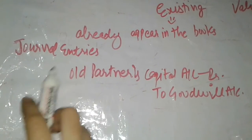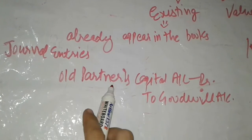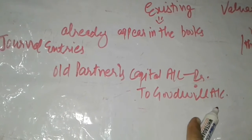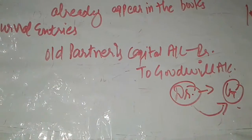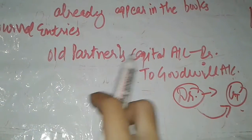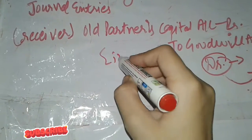Now we will see the journal entry for existing goodwill: Old Partners' Capital Account debit, to Goodwill Account. The logic behind this entry is that when goodwill appears in the books, it has a debit balance, and when we close that account, it is credited. The amount of goodwill is received by the old partners, so Old Partners' Capital Account is debited. We simply close our goodwill account by distributing the balance to all partners in the old ratio.